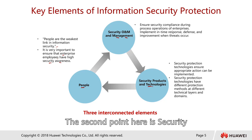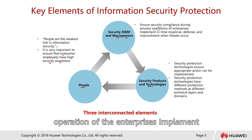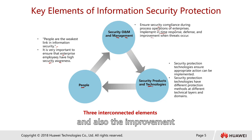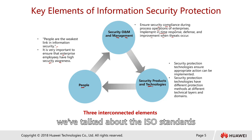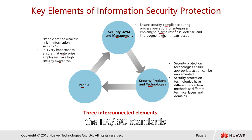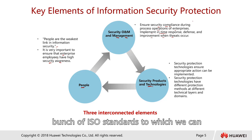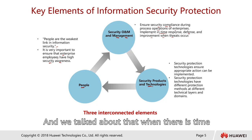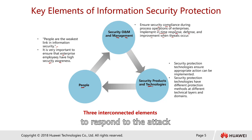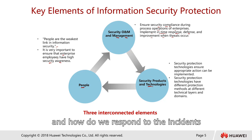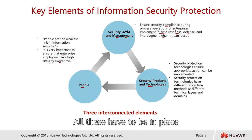The second point is security operating maintenance — ensuring security compliance during enterprise operations, implementing timely response and defense, and improvement when threats occur. As discussed in the previous chapter with the IEC and ISO standards, there is a whole process that we can follow for operations compliance. We also discussed how to respond to attacks and incidents when something goes wrong, and how to overcome those situations. All this has to be in place.